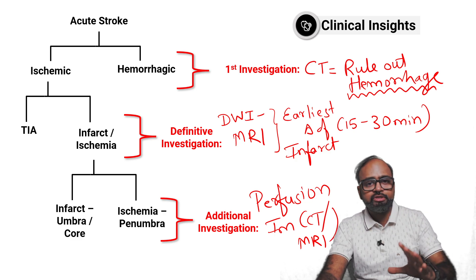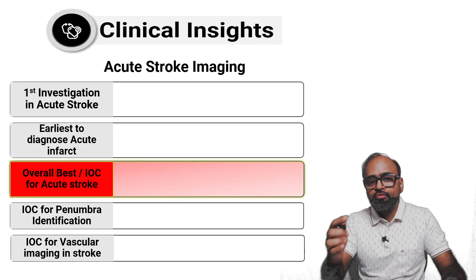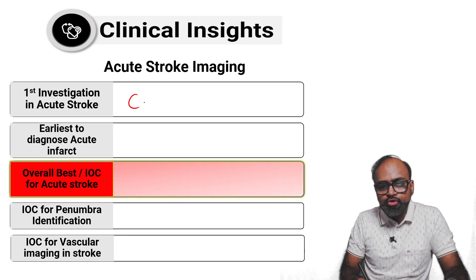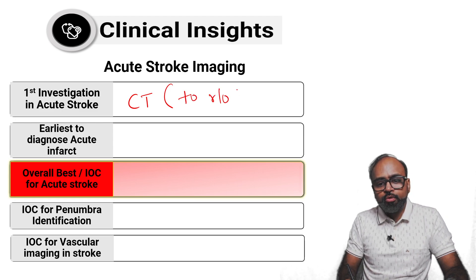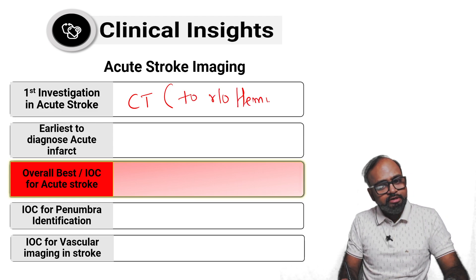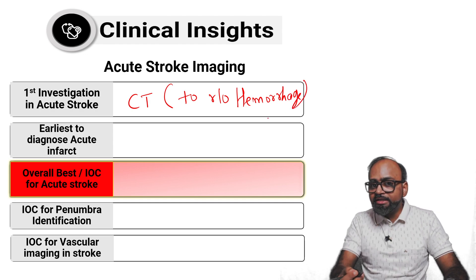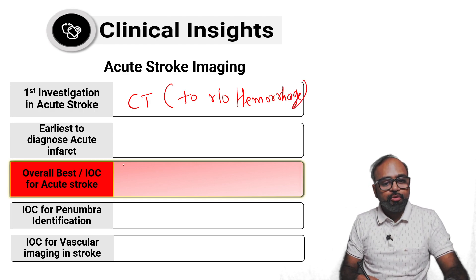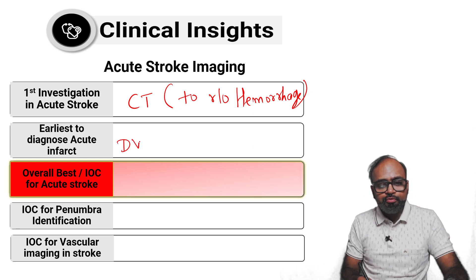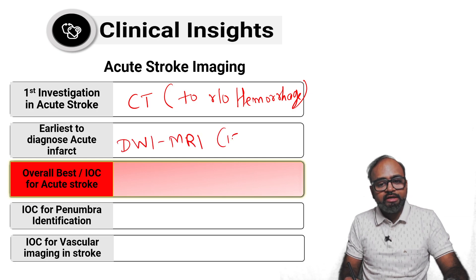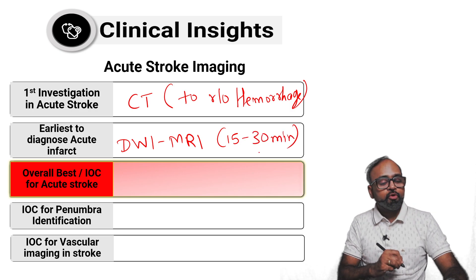Let us quickly revise. A lot of questions have been asked and will be asked on this particular topic. So what is the first investigation to be done in acute stroke? It is CT. It is done to rule out hemorrhage — that is the concept we have discussed. The earliest imaging modality to detect an acute infarct is diffusion weighted imaging MRI, which can detect an infarct as early as 15 to 30 minutes from onset.